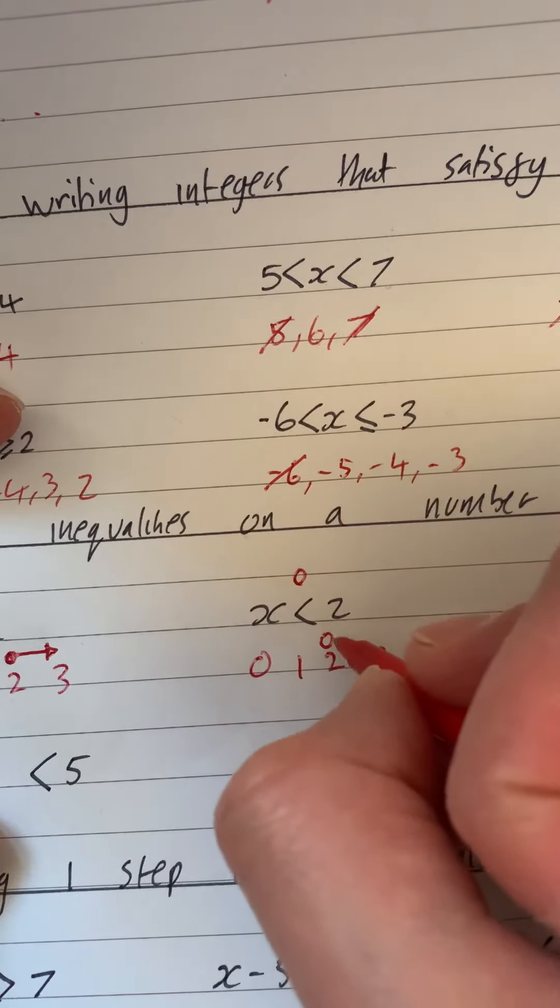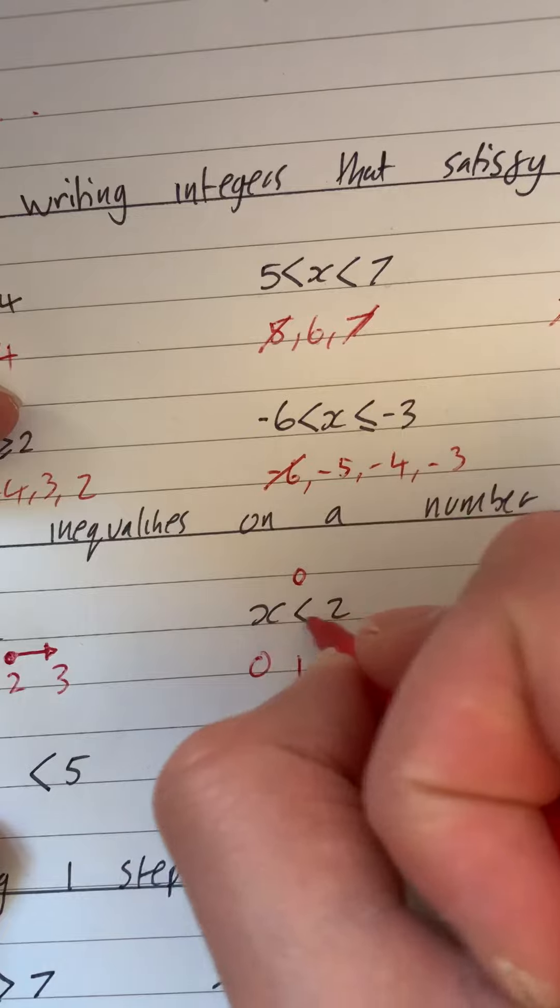So we put this one when it's an equal to or less than. So when it's a less than or greater than but no equal to, we just put a little non-colored in dot.